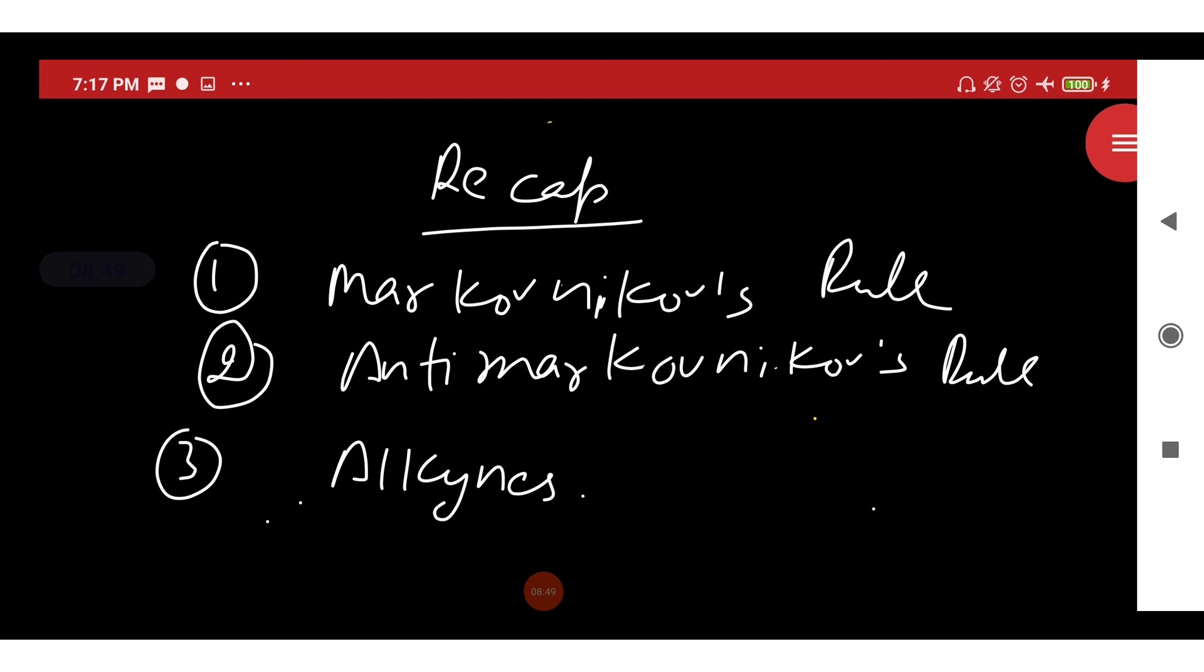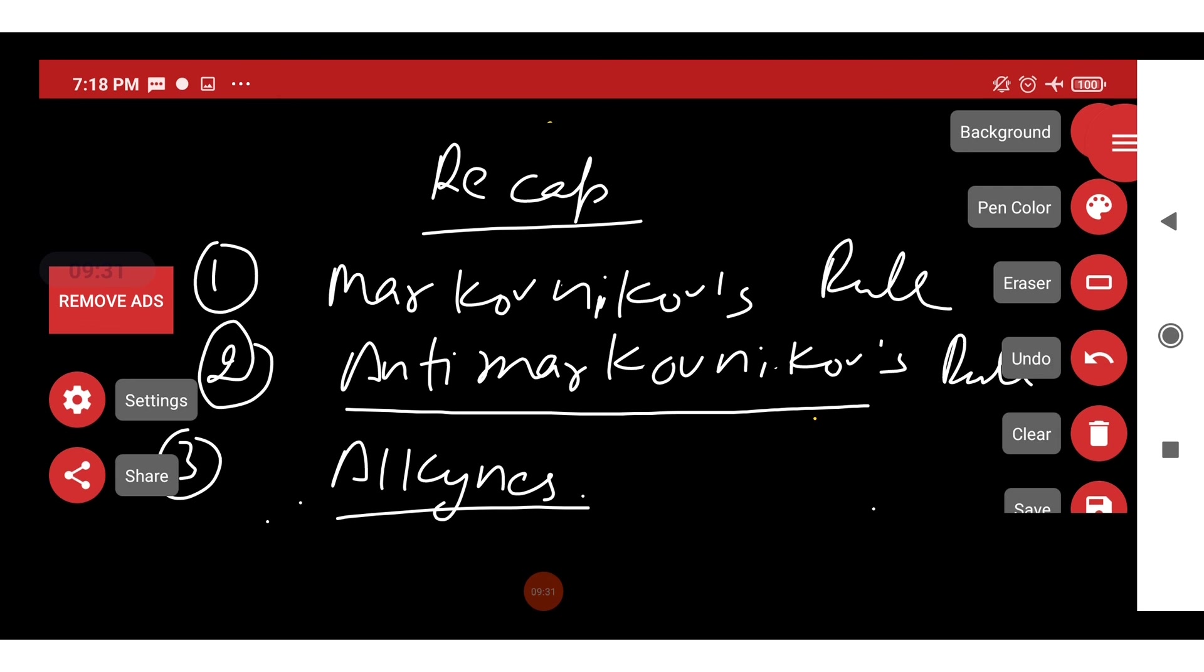Let's have brief recap. In Markovnikov's rule, we studied that 2-bromopropane is the major product when hydrogen halide is treated with unsymmetrical alkene. And when peroxide is added, then 1-bromopropane is the major product. And we studied about alkynes, its physical and chemical properties in detail. Hope you enjoyed the video. Thank you.